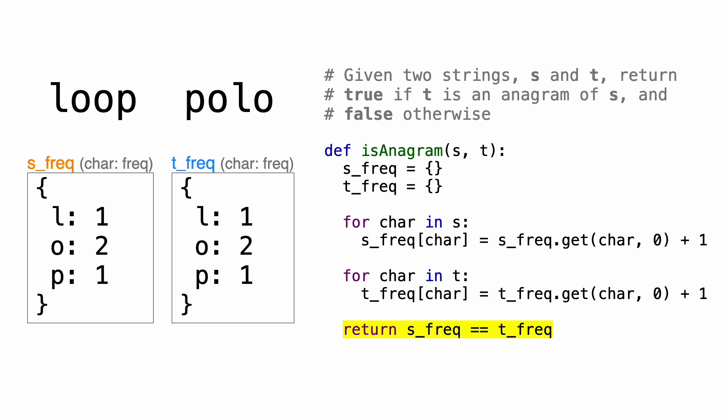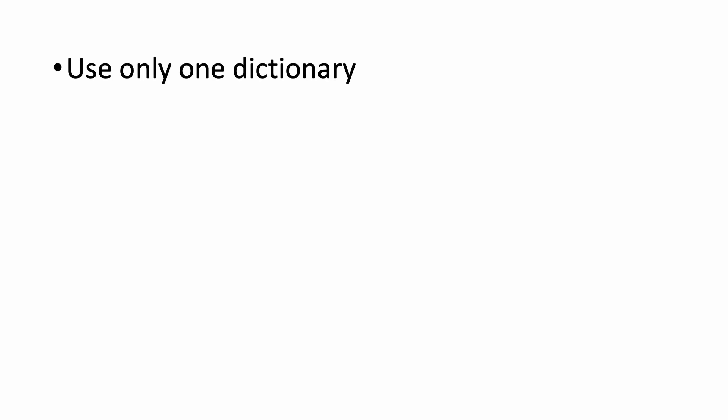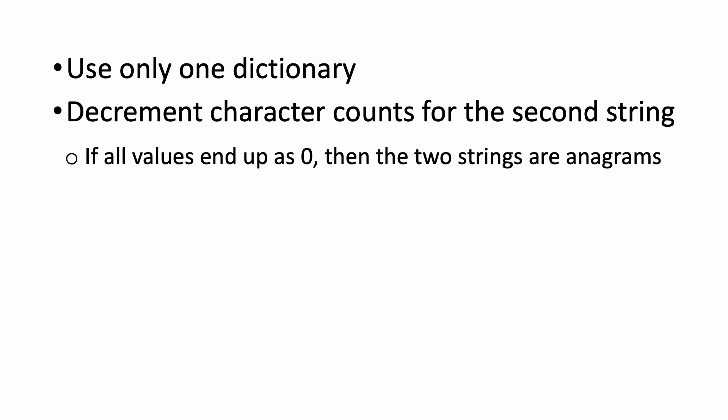Now before I end this, I want to mention a couple of variations on this solution that you could do. If you wanted to save space, then instead of creating two dictionaries, one for each string, you could only use one dictionary. For the first string, you would increment the values in the dictionary, but for the second string, you would decrement the values in the same dictionary. Then at the end, if all the values in the dictionary are zero, then that means that the character frequencies are the same, and the strings are anagrams.